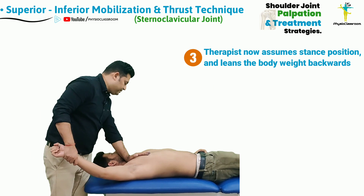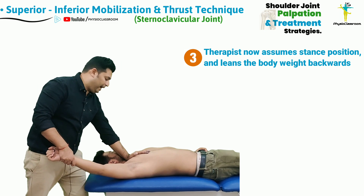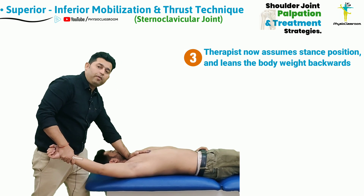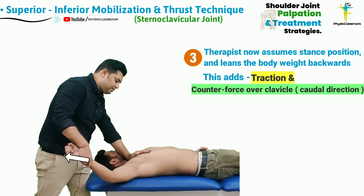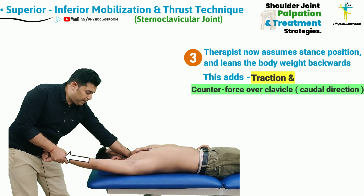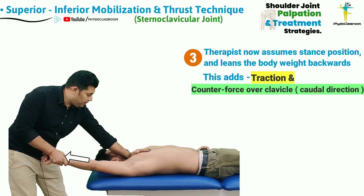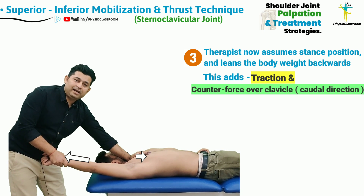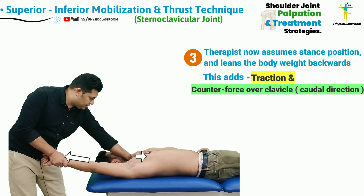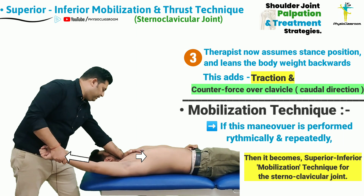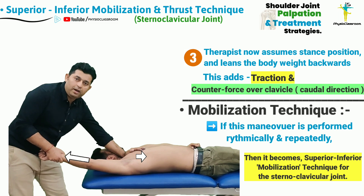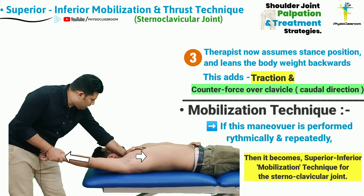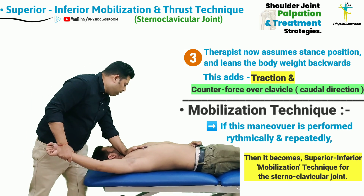Utilizing the left hand, the therapist is going to place the contact point — whichever is comfortable — over the medial superior end of the clavicle bone. While maintaining contact with both hands, the therapist assumes the stance position and then leans the body weight in the backward direction. This not only tractions the patient's right arm upward, but also applies a counterforce with the therapist's left hand in the downward direction.